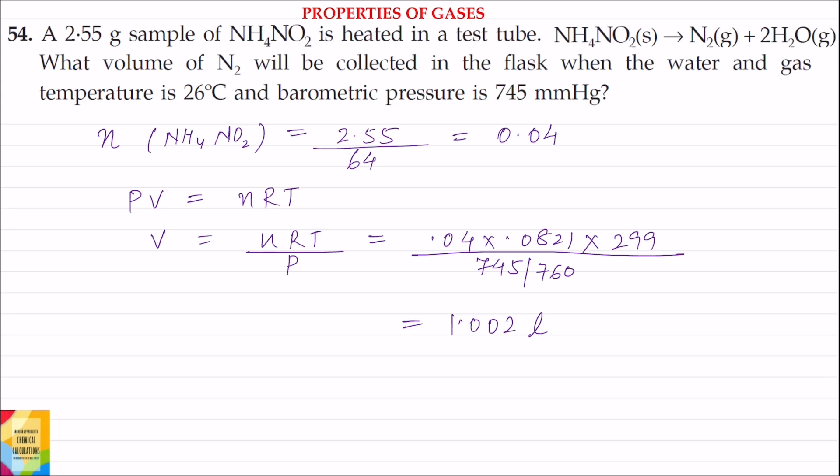What volume of N2 will be collected in the flask when the water and gas temperature is 26 degree centigrade and barometric pressure is 745 mmHg.